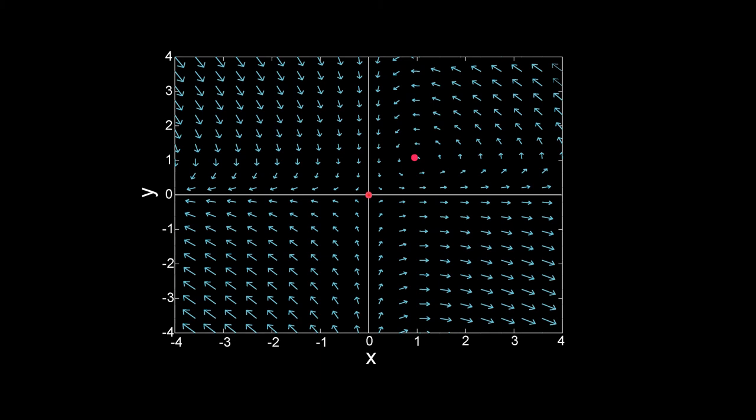I have marked the steady states in the phase plane plot. Now, we will check the behavior of the system around the steady state 1, 1.